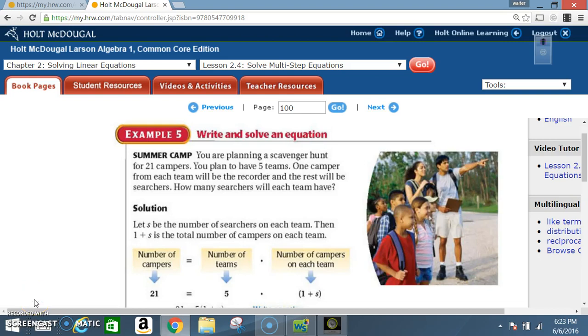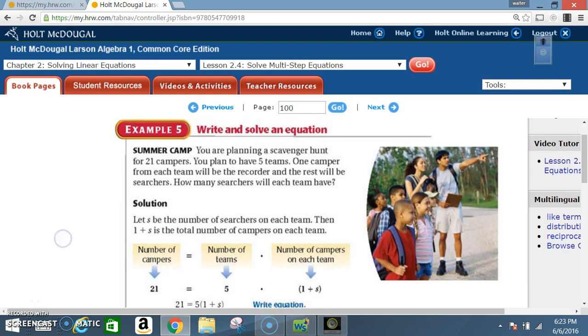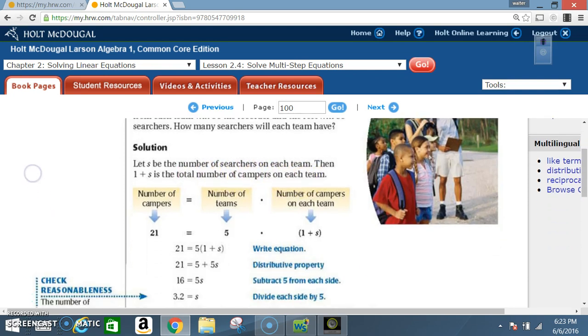Okay, example five in more detail. Remember we were saying that part of the solution is let s be the number of searchers on each team, then 1 plus s is the total number of campers on each team.